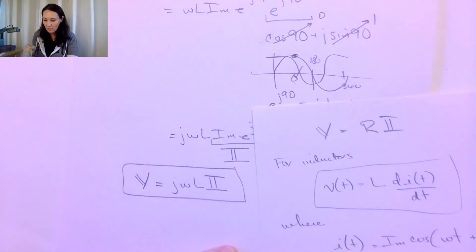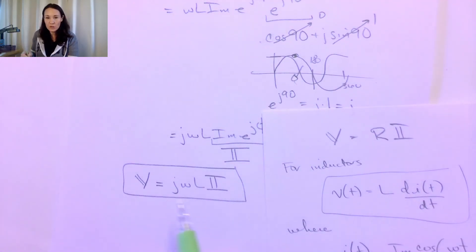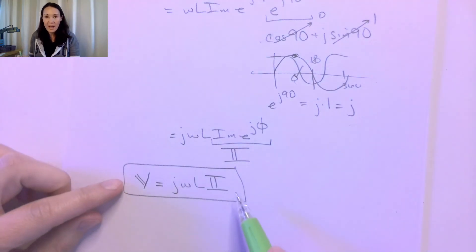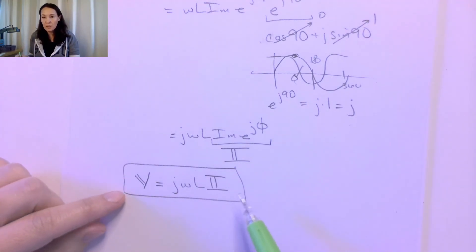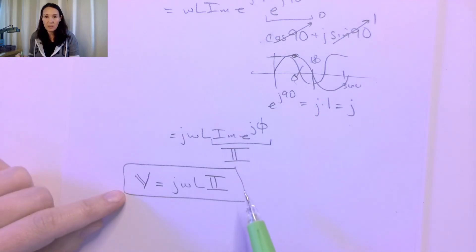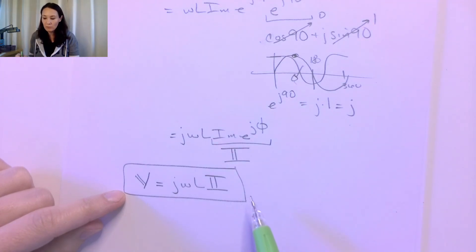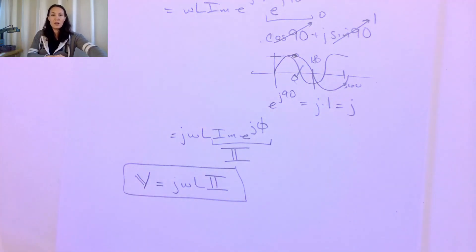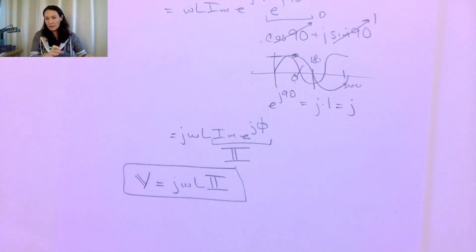The derivation for capacitors is very similar, so you can try that one. The key benefit of working in the phasor domain is that you don't have to compute any derivatives. This will also be helpful when we start talking about impedance, since impedance is modeled by a complex system. Let me know if you have any questions about phasors and this new notation, and we can do some examples too.